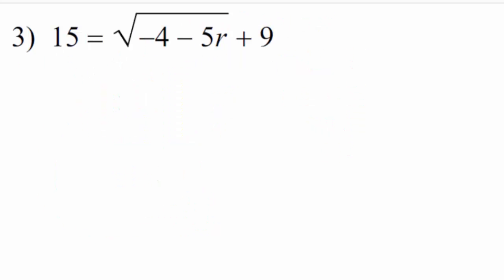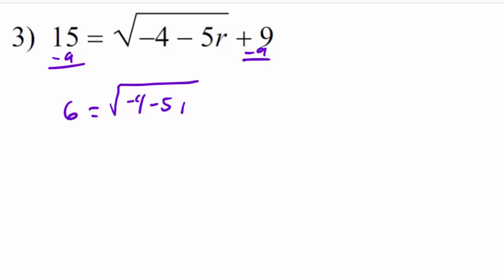For the next example, I'm going to leave them as square roots. The first thing I want to do is isolate the radical, so I subtract 9 from both sides and end up with 6 equal to the square root of negative 4 minus 5r. To undo the square root, we square both sides: 6 squared is 36, and this cancels out with the radical, leaving negative 4 minus 5r.